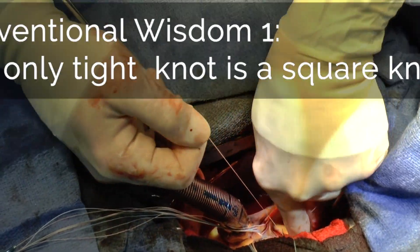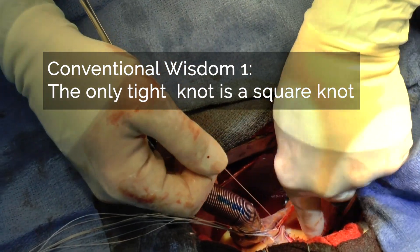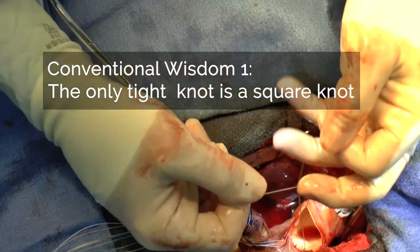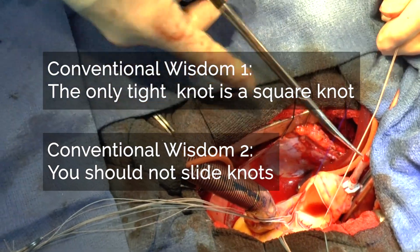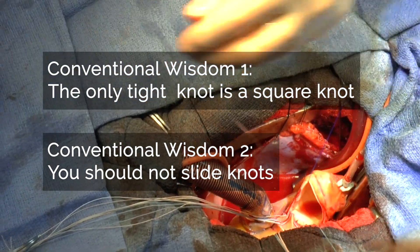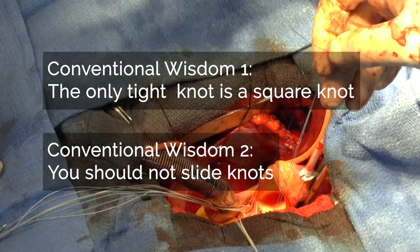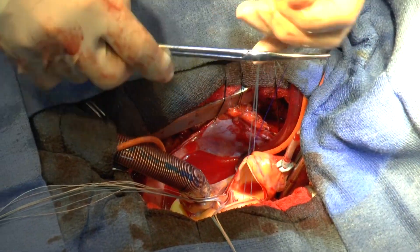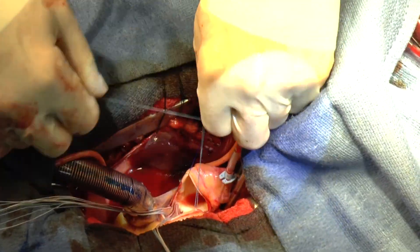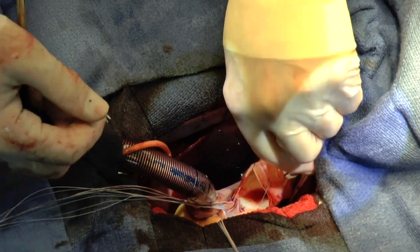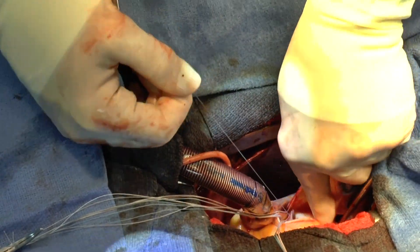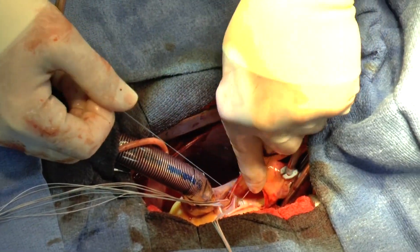Conventional wisdom number one is that the only tight knot is a square knot. Conventional wisdom number two is that you shouldn't slide knots because friction will weaken the suture material and make it likely to break. At extremes of force that is certainly true. However, I'm here with better alternatives to the conventional wisdom and I will show you why.